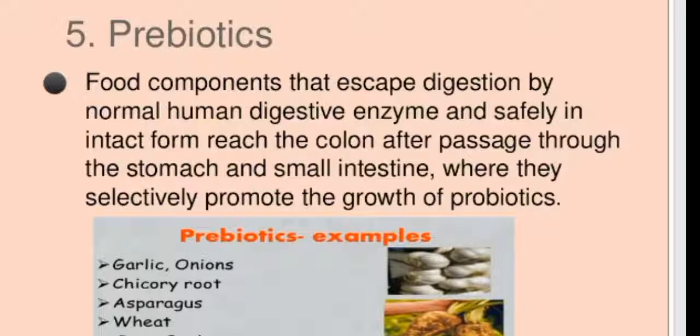Prebiotics are food components that escape digestion by the normal human digestive system and safely reach the colon after passage through the stomach and small intestine. Examples include garlic, onions, asparagus, wheat, rye, barley, breast milk, tomatoes, berries, and bananas.